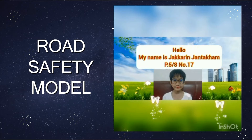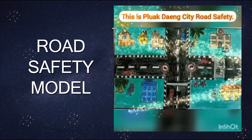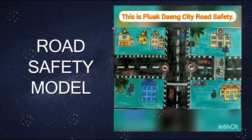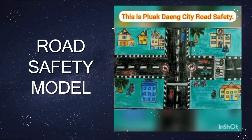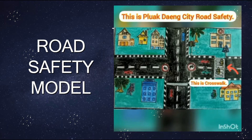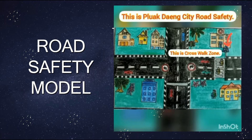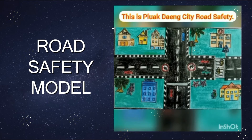Last week we studied about the Road Safety Model. This is Road City. This is School. This is Hotels. This is Park. This is Shop. This is Home. This is Police Station. This is Hospital. This is Crosswalk. This is Crosswalk Zone. This is Screen Park. This is Traffic Light. This is Turn Lift. This is Turn Line.